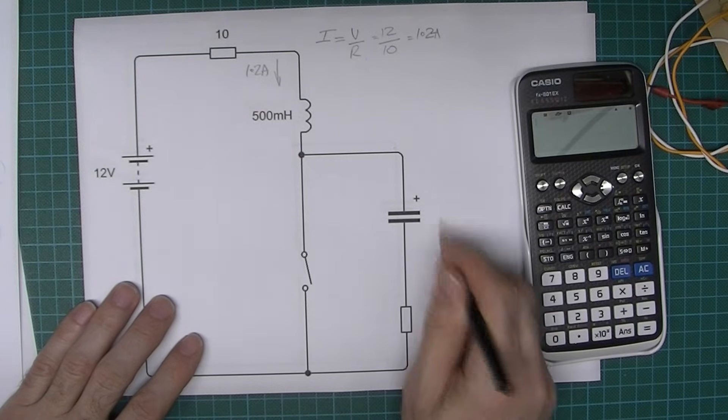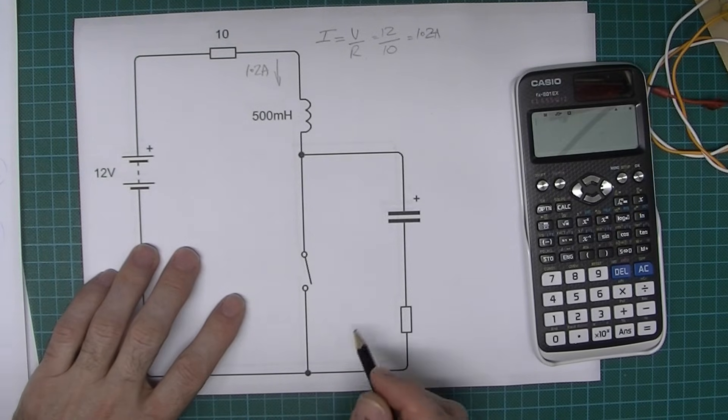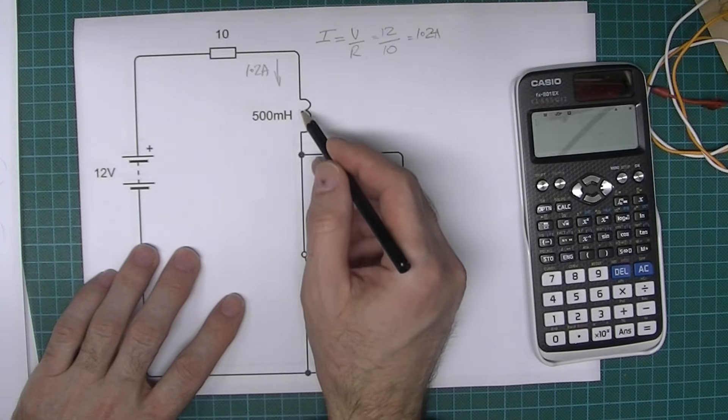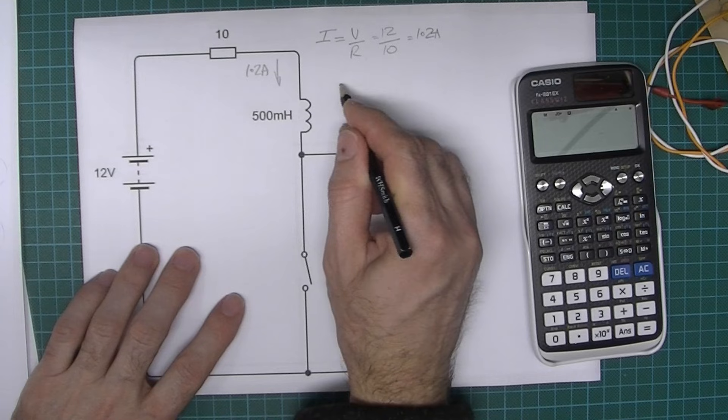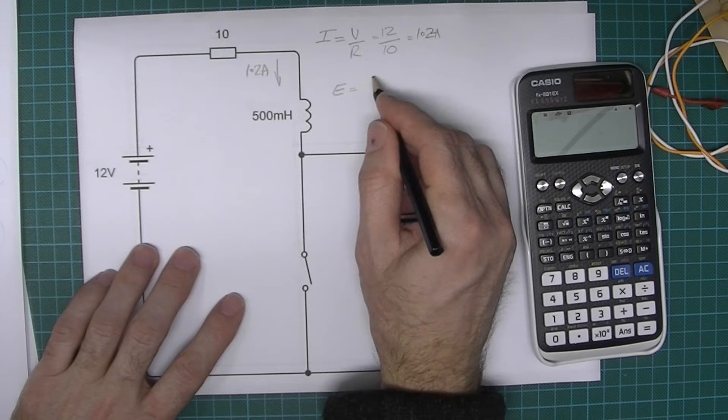The next thing we need to calculate is how much energy can be stored in this coil. The formula for that is energy, which is measured in joules, equals half the inductance L times the current I squared.